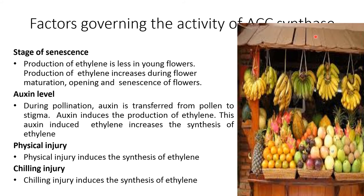Factors governing the activity of ACC synthase include: stages of senescence (production of ethylene is less in younger flowers, increasing during flower maturation and opening), auxin level (during pollination, auxin is transferred from pollen to stigma, which induces production of ethylene and increases its synthesis), and physical injury (physical or chilling injury also induces ethylene synthesis).